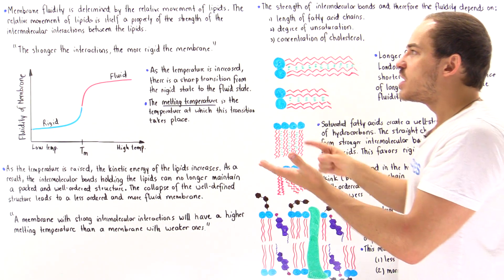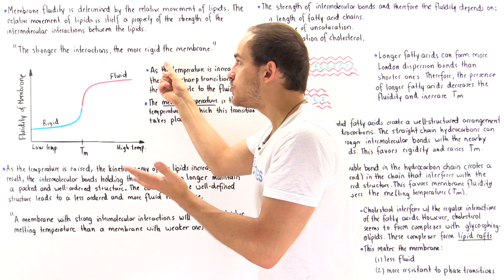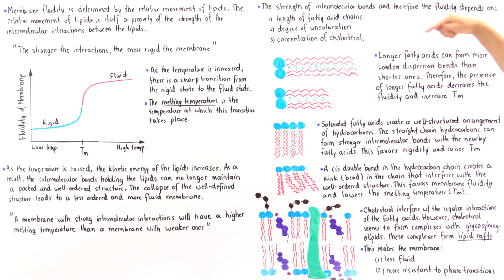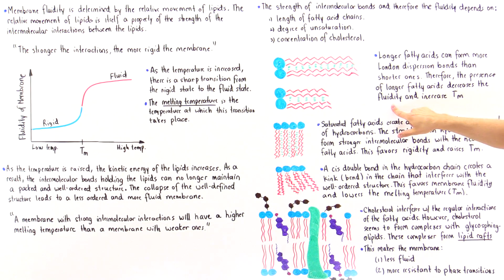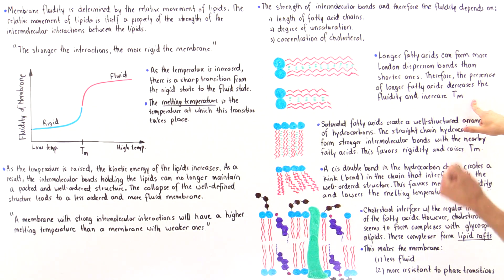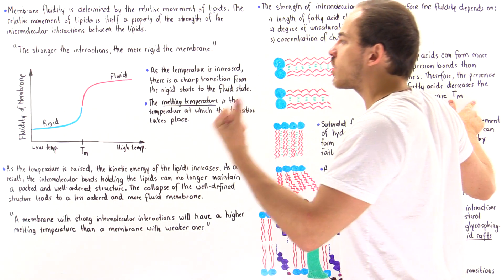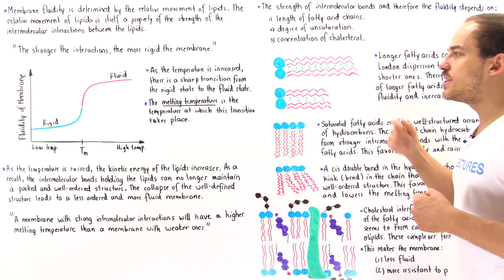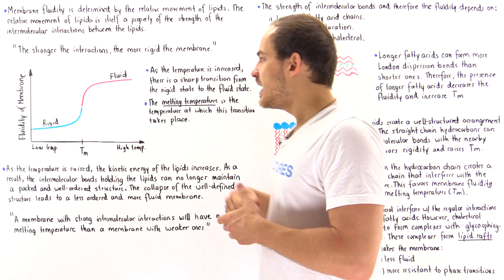In such a case, the membrane will be more rigid and will have a higher melting temperature. Longer fatty acids can form more London dispersion forces than shorter ones. Therefore, the presence of longer fatty acids decreases fluidity, makes the membrane more rigid, and increases the melting temperature, because more energy is required to break those London dispersion forces.